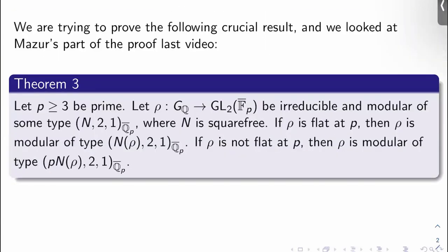Recall we're trying to prove the following crucial result, and we looked at Mazur's part of the proof last video. So Theorem 3: Let p ≥ 3 be prime. Let ρ: G_Q → GL_2(F̄_p) be irreducible and modular of some type (N, 2, 1) over Q̄_p, where N is squarefree.